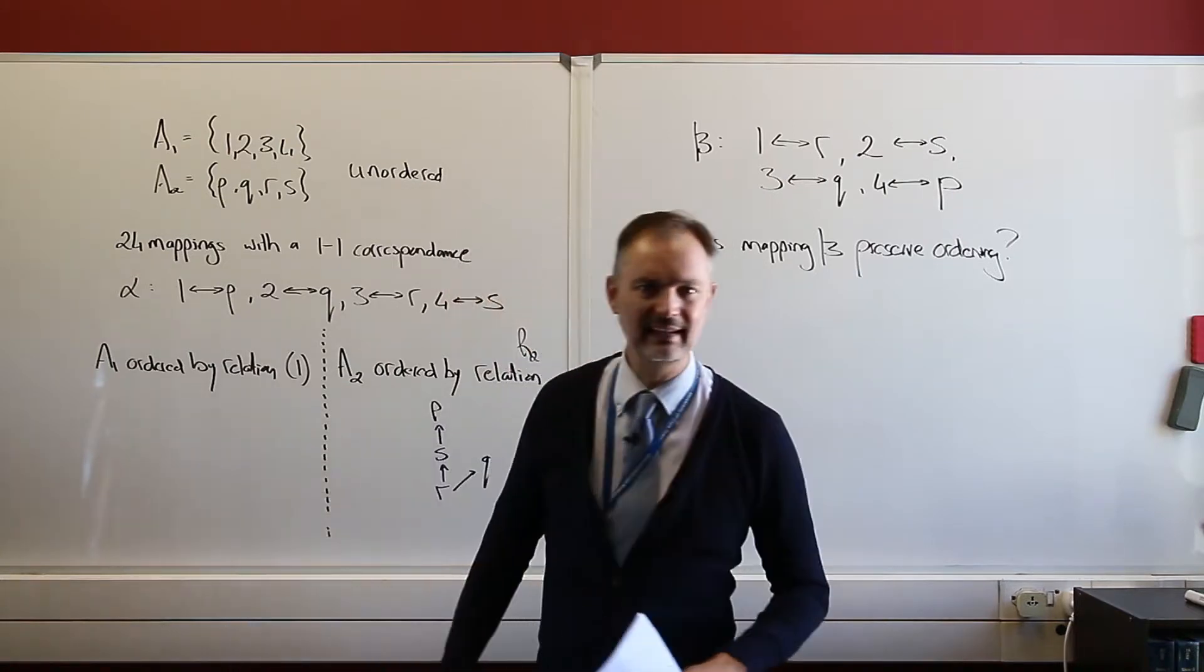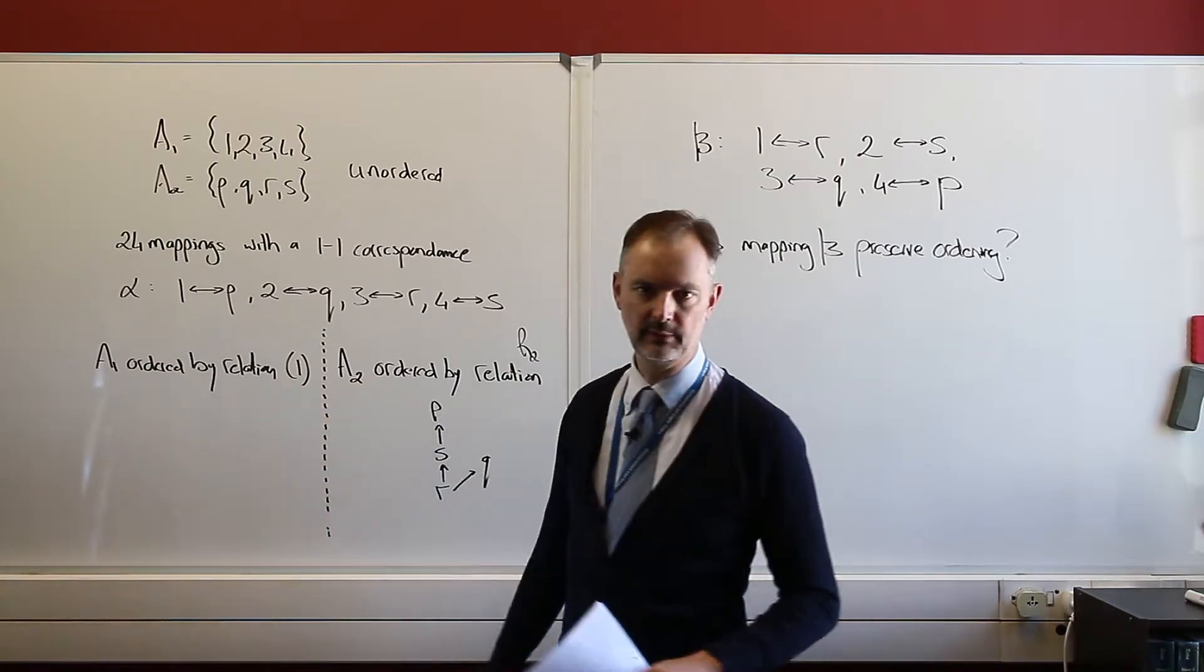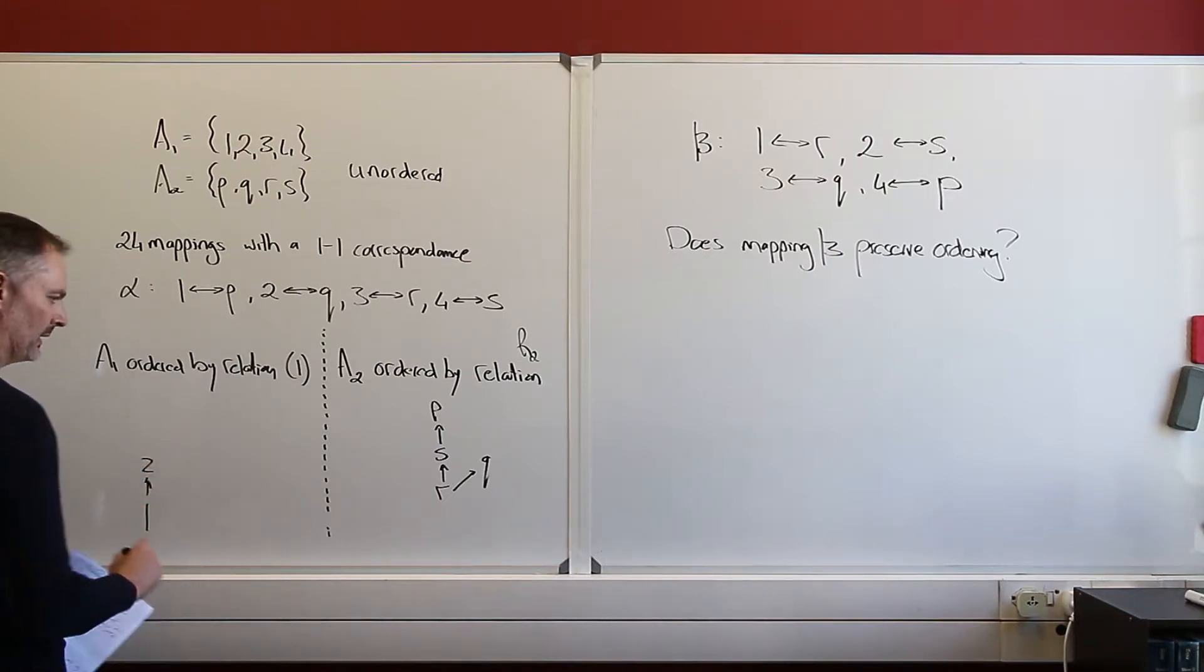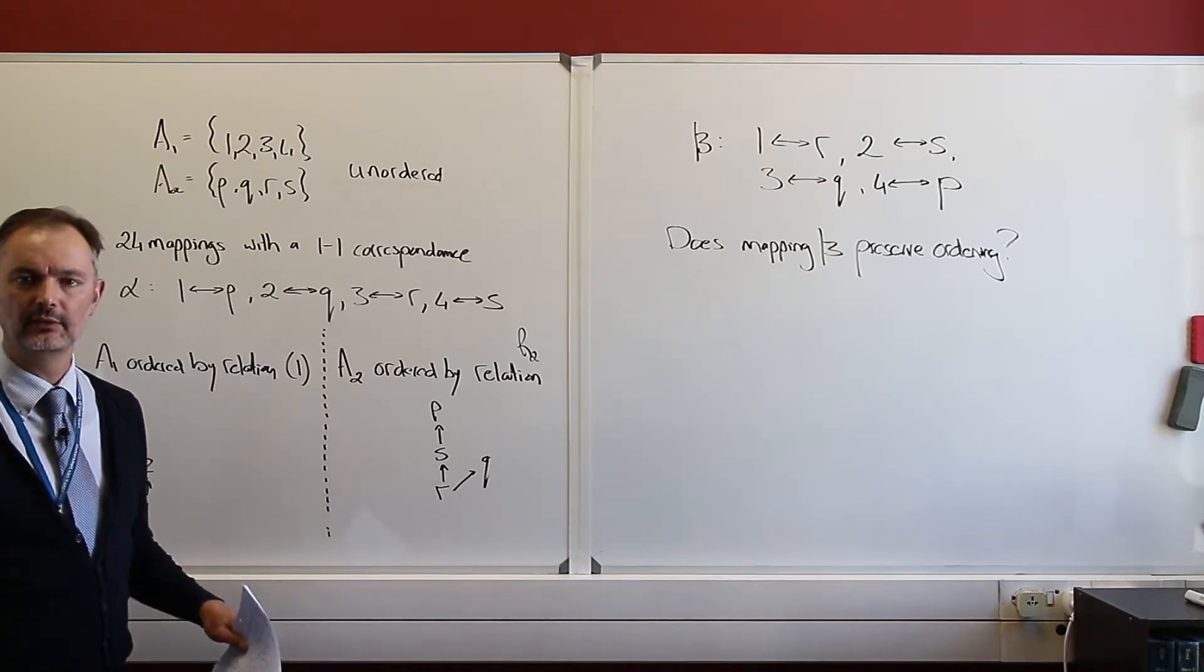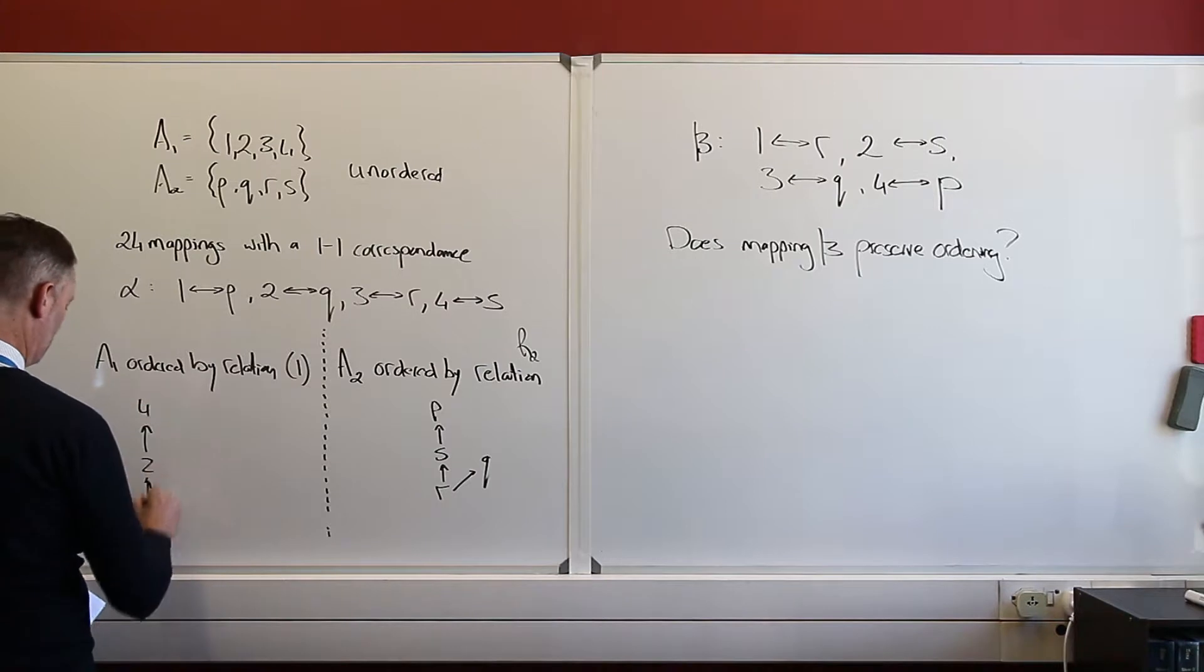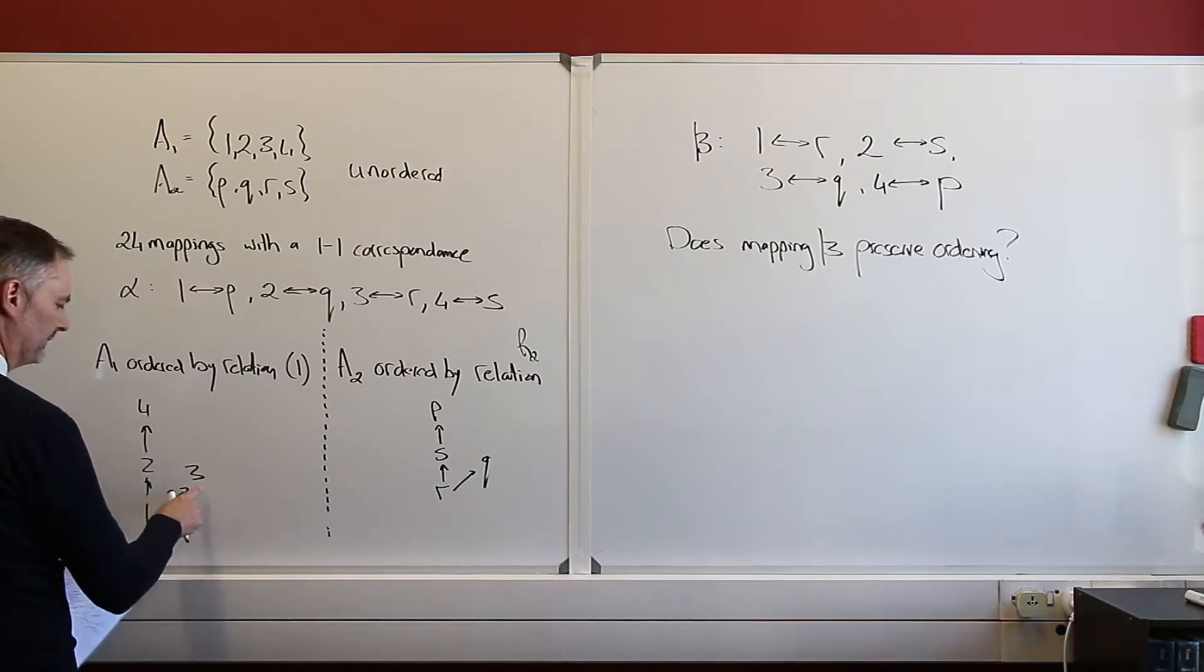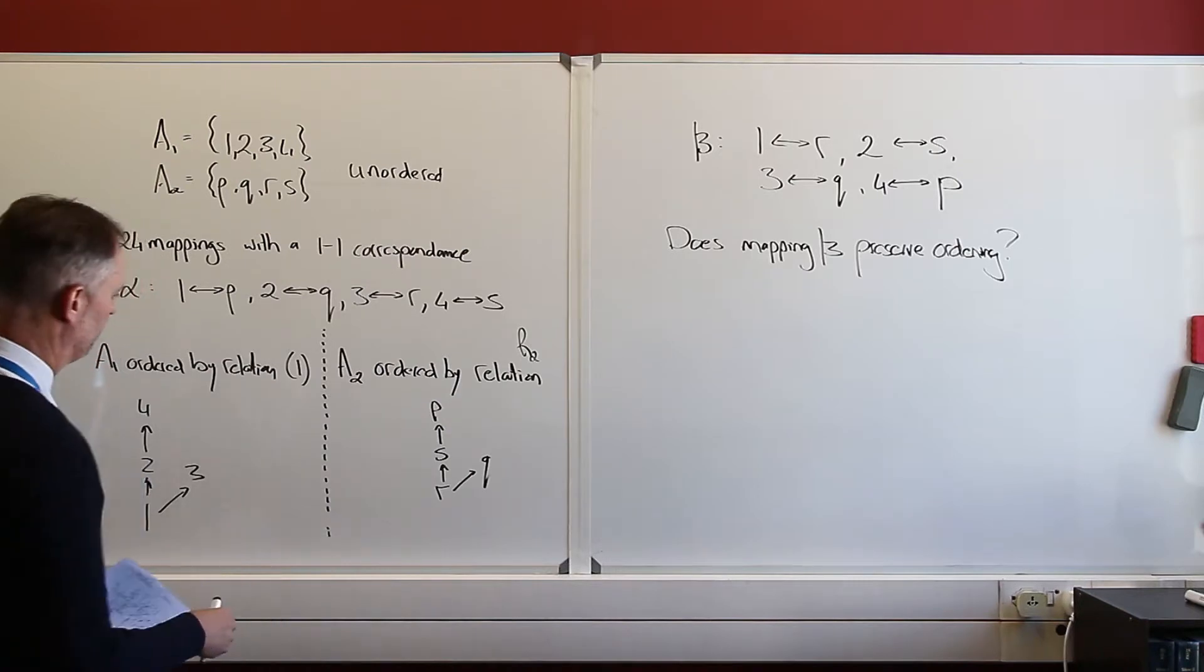On A1, I'm going to do another ordering relation, and that is going to be, is divisible by, so divides. And let's start that ordering. So 1, 1 definitely divides 2, because 1 goes into 2, or 2 over 1. There's no remainder. 2 definitely divides 4, and 1 also divides 3. 3 certainly doesn't divide 2. 2 doesn't divide 3. 3 doesn't divide 4. 4 doesn't divide 3. Divides means there's no remainder if I do that division.